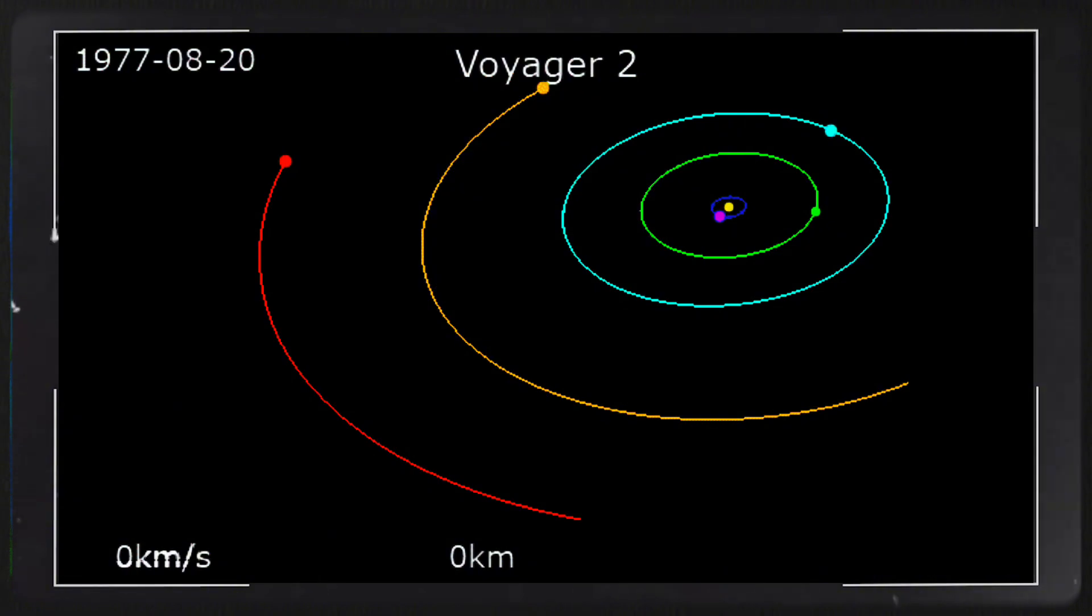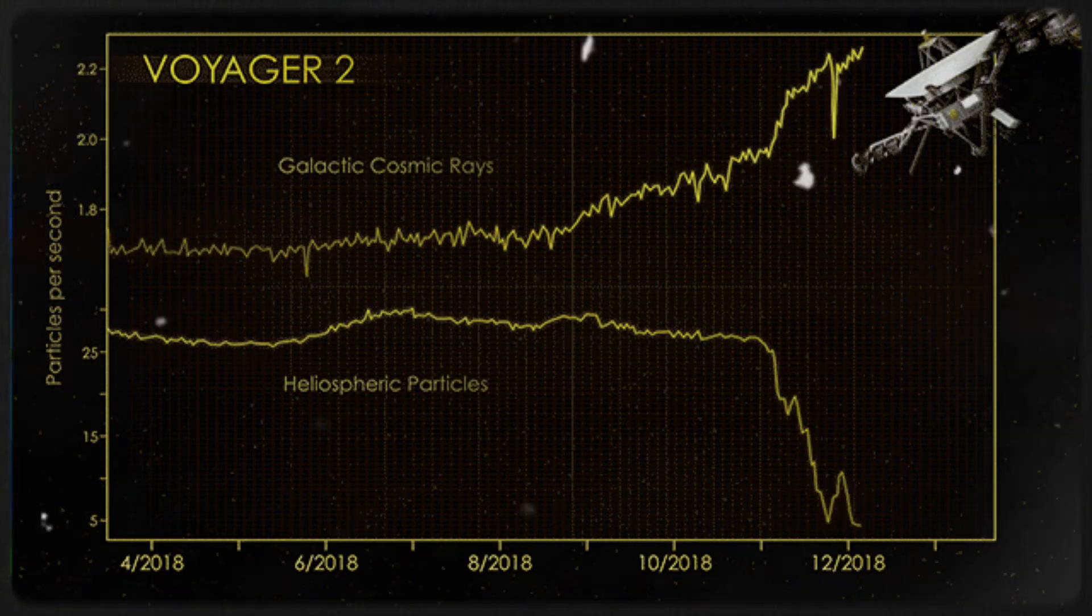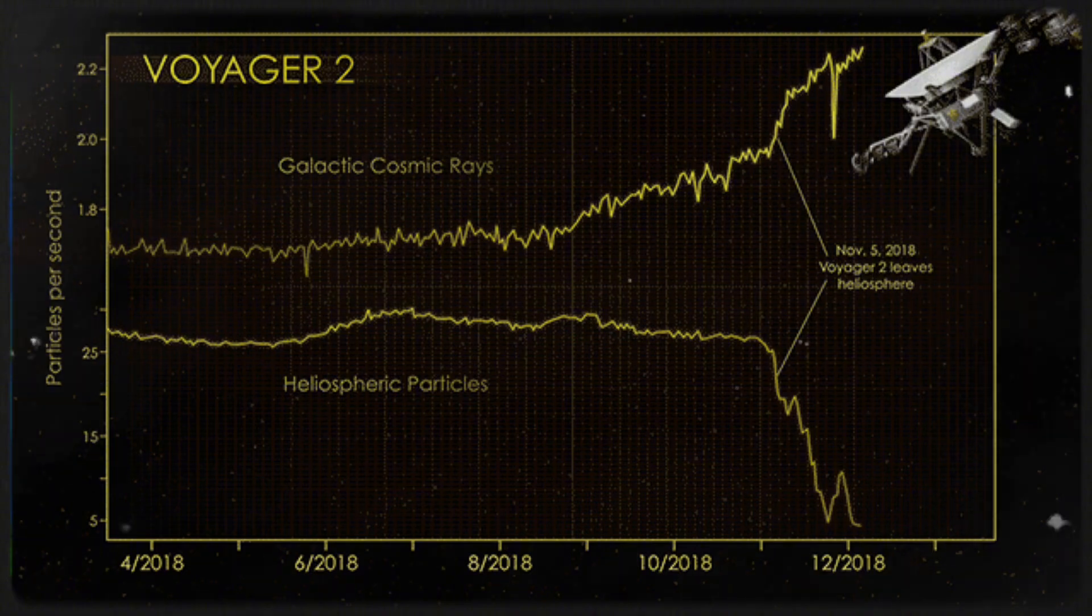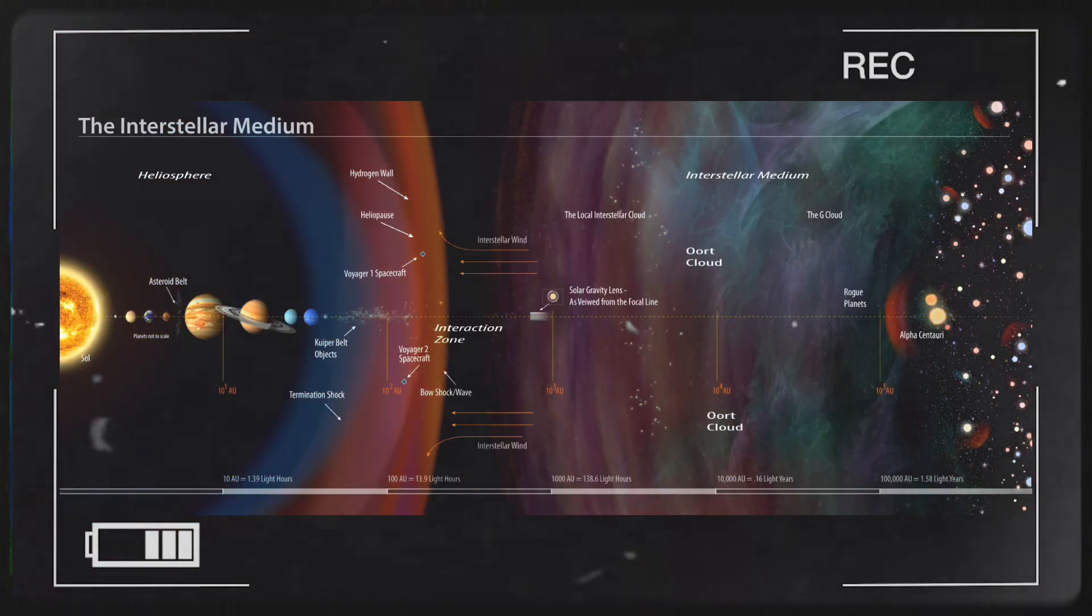A significant part of Voyager 2's mission is to verify the information gathered by Voyager 1, checking for both similarities and discrepancies. For instance, one key objective is to confirm findings regarding the density of particles in interstellar space. The plot thickens, however, when we consider the remarkable and at times perplexing variations in the measurements taken by the two probes. To fully grasp the discoveries made by Voyager, it's essential to understand the structure of the solar system's boundaries.